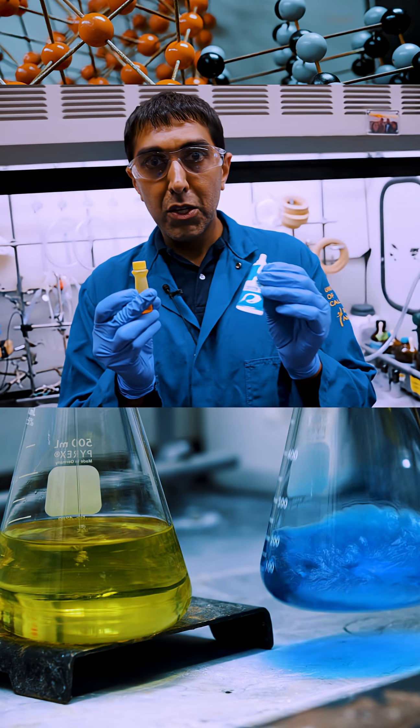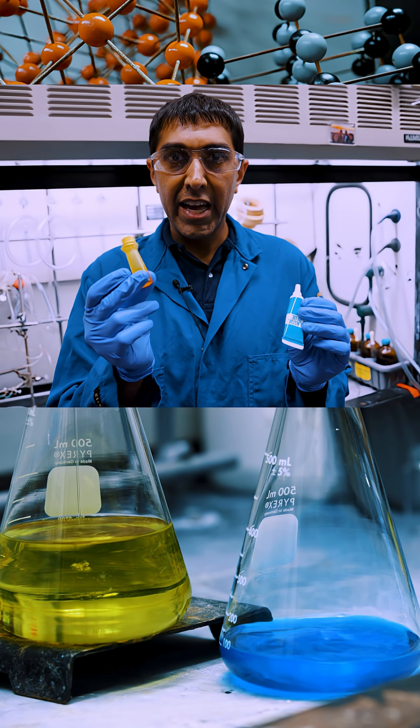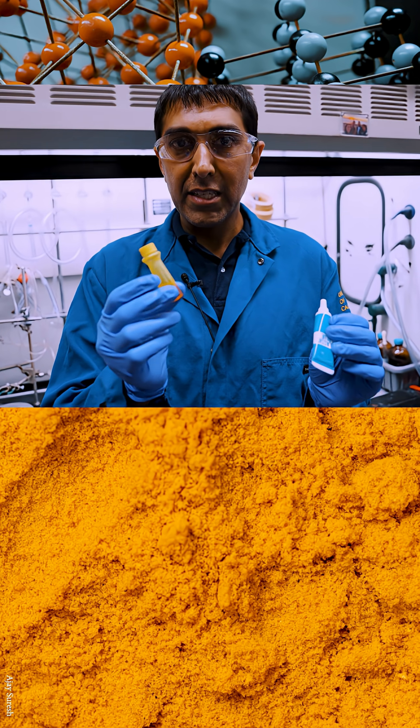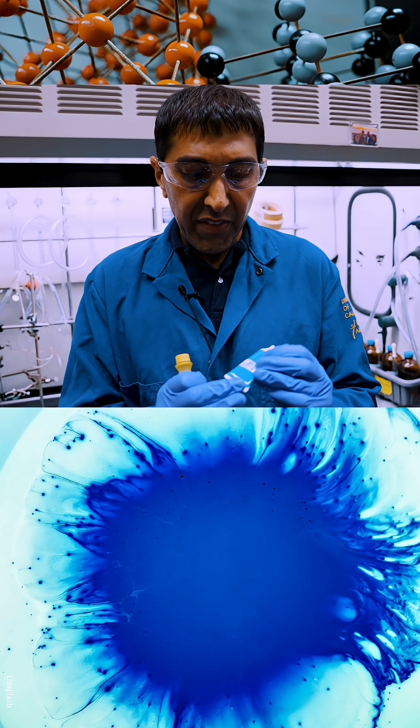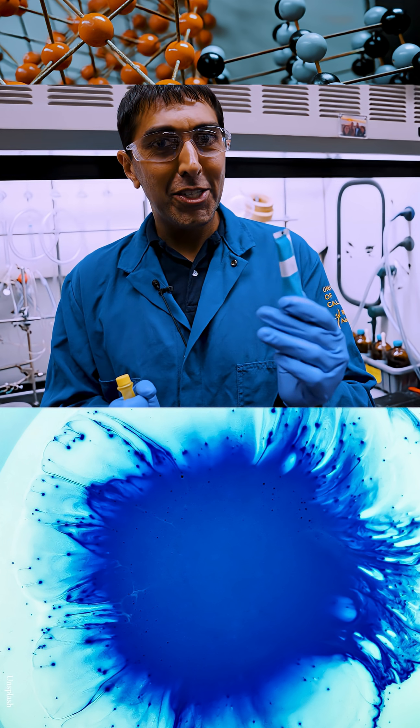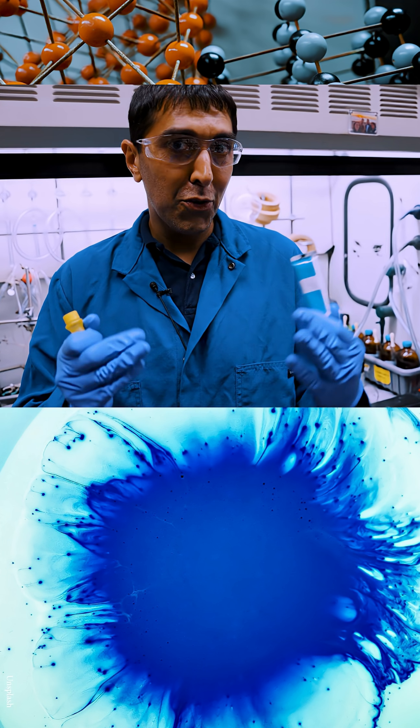So this demonstration involves these two chemicals. This is a yellow dye, curcumin. If you know turmeric as a spice, this is what gives it the color. And this is a classic blue, which is a blue dye that's often used in desserts, for example.